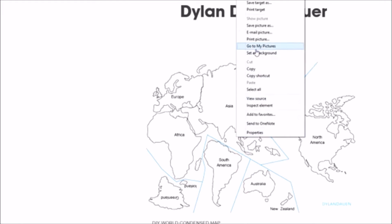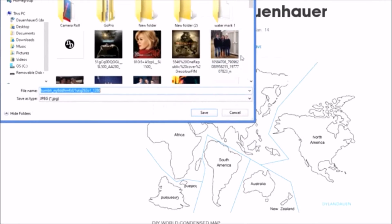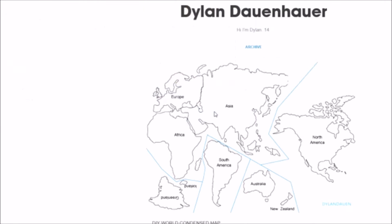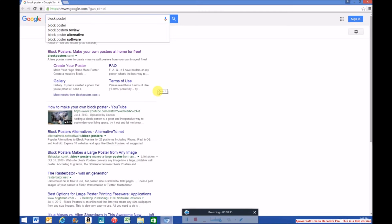If you'd like, you can find your own map of your state or country or whatever you like. Save it to your library and go to blockposters.com, which is a website that blows up images.